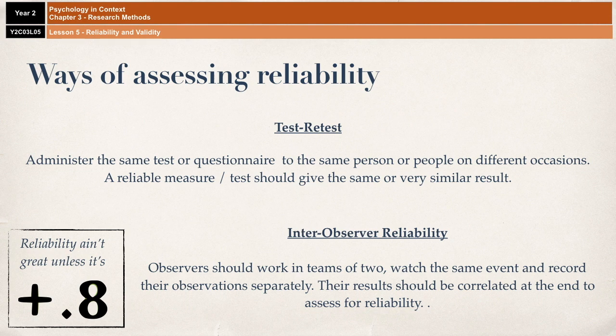So it should never be just one person observing something — it should always be two. And if at the end both observers don't find a strong positive correlation in terms of what they've observed, then maybe they haven't done something properly. That means their behavioural categories aren't operationalised properly — maybe they're a little too vague and people are interpreting or misinterpreting what they've seen. Usually what tends to happen is that observers conduct a small-scale pilot study first, just in order to establish that observers are actually applying the same behavioural categories in the same way.